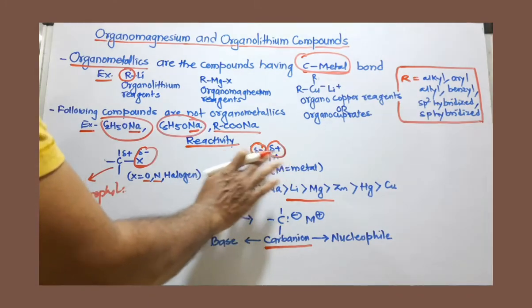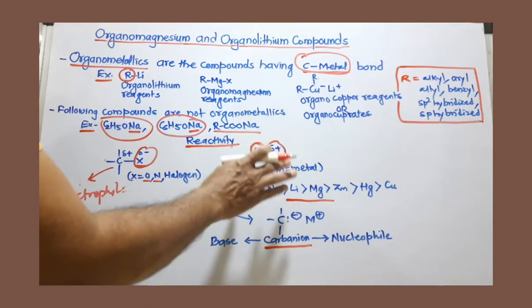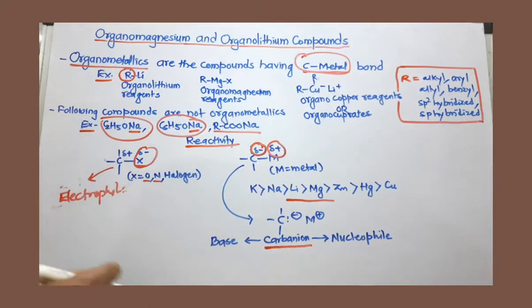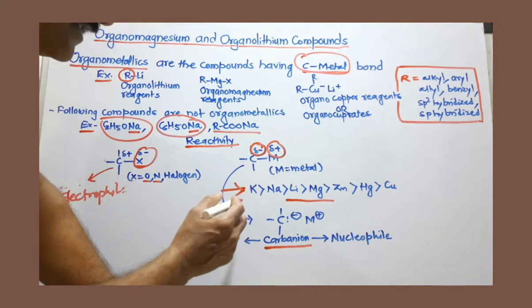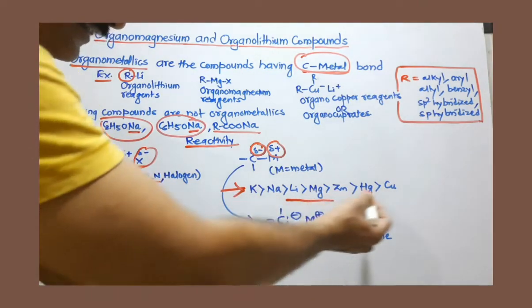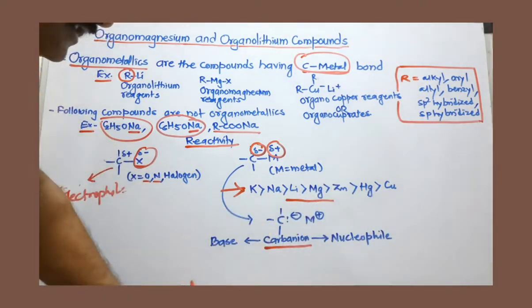So this bond is not a covalent bond. There is an ionic character, or the completely ionic bond, if that electronegativity difference is more. Now I have given here the list, which you can see, as we move toward this side, electropositivity increasing.